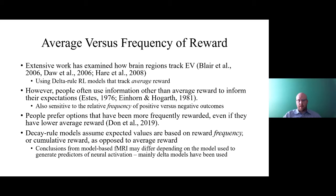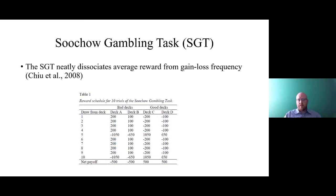Since nearly all model-based fMRI has been done using delta-rule models that track average reward, using regressors from decay-rule models could show different results. Another goal of this study was to dissociate activation tied to these two different model types. We used a task that dissociates average reward from gain-loss frequency. Many aging studies have used the Iowa Gambling Task, but the Soochow Gambling Task was developed in 2008 to correct for a problem with the Iowa task — that reward frequency was not neatly dissociated from average reward.